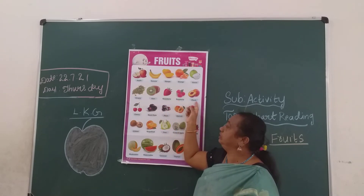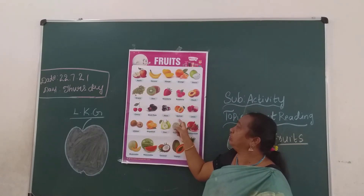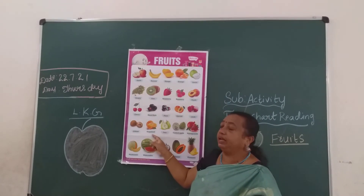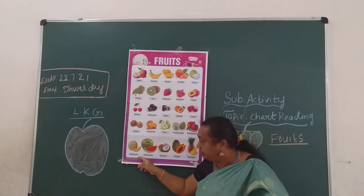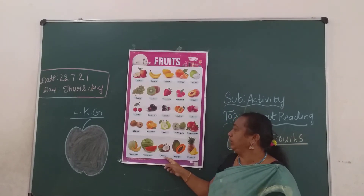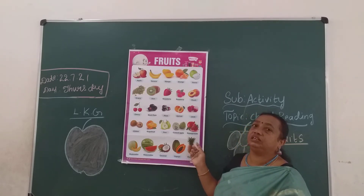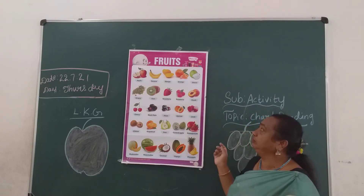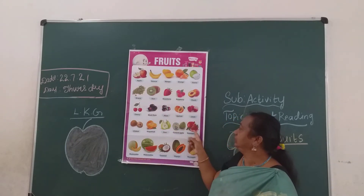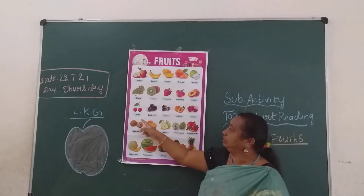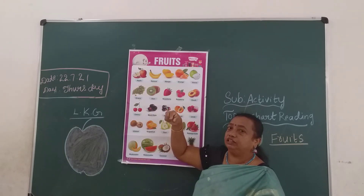Peach, cherry, black plum, plum, apricot, lychee, chiku, grapefruit, pear, custard apple, pomegranate, musk melon, watermelon, coconut, papaya, pineapple. Where can you see cherry? In the cake pattern — on the top of the cake you can see the fruit cherry, children. This one — apple. This one — orange.